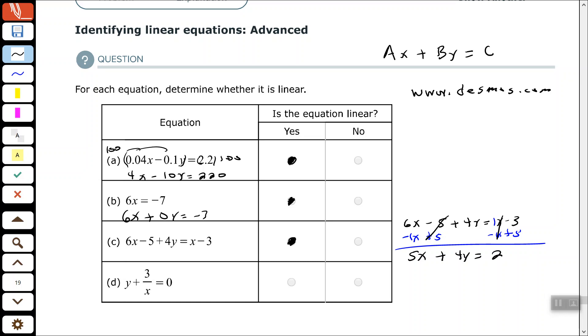Now, D, we have a variable in our denominator that has a positive exponent 3 over x. So, because we have this x in our denominator here, then no, that would not be a linear equation.